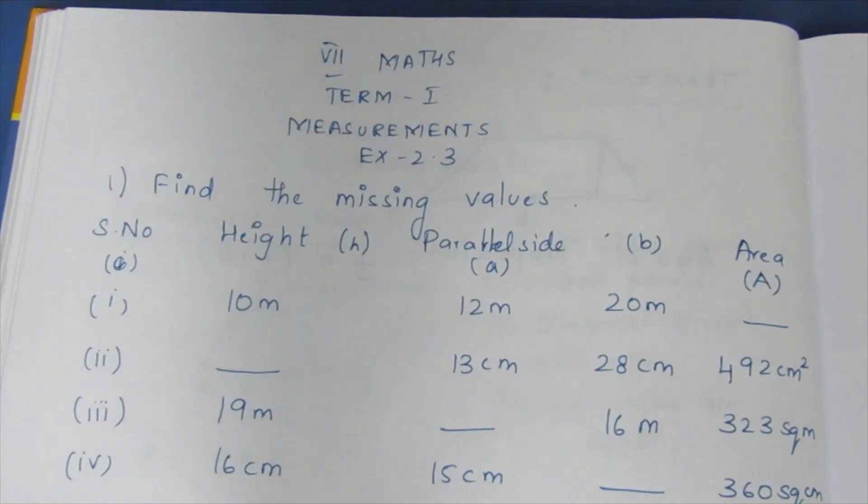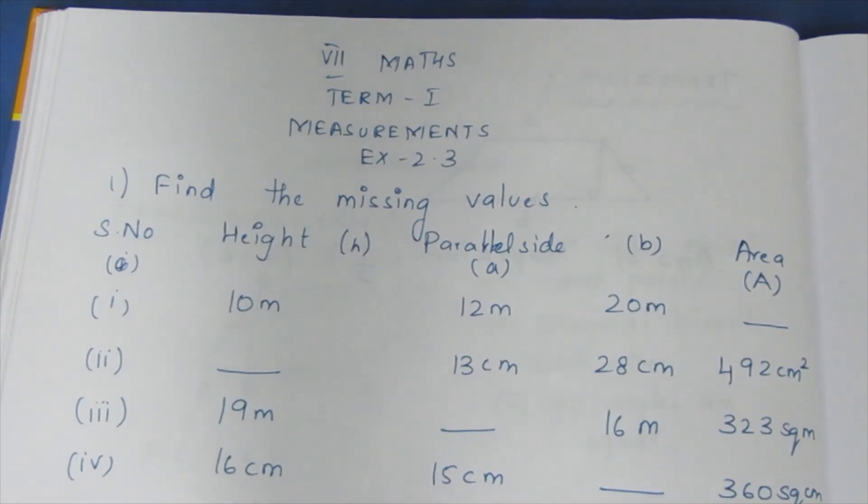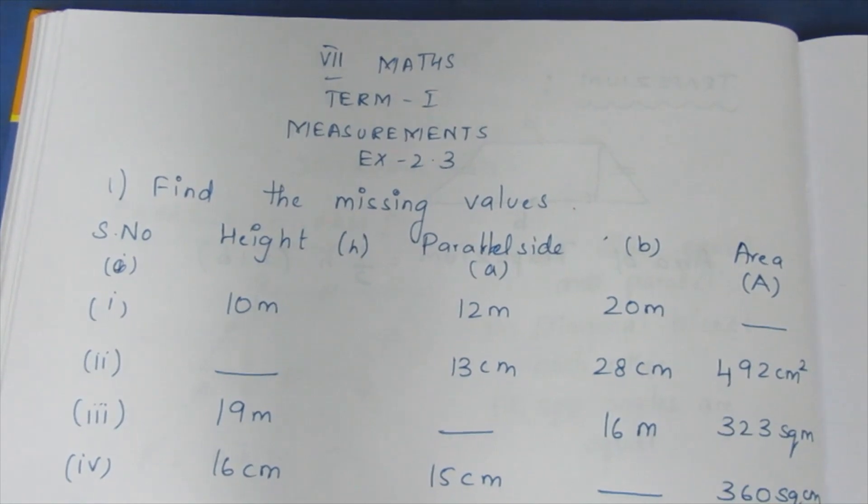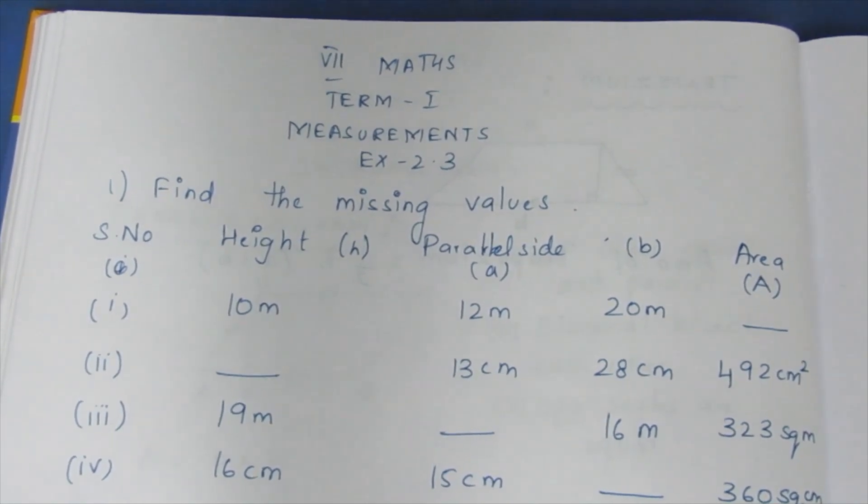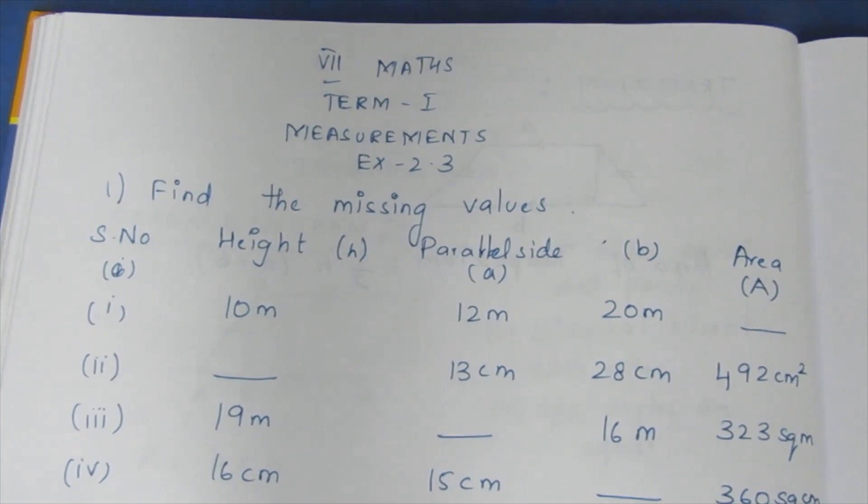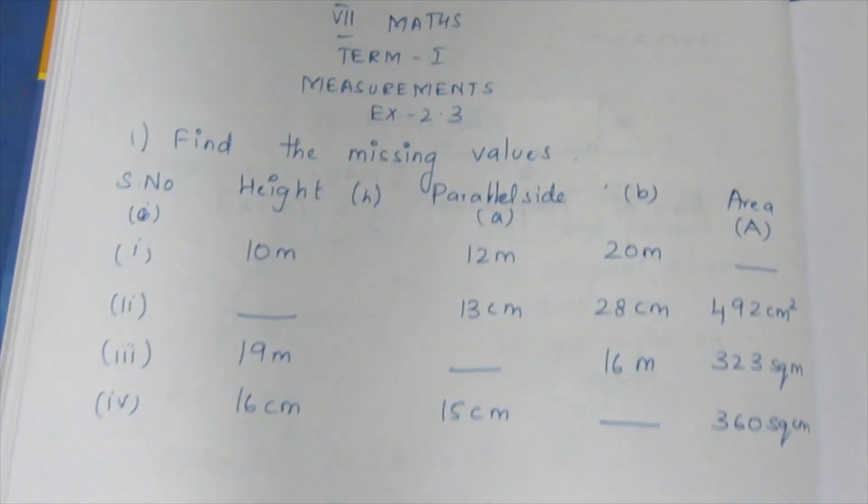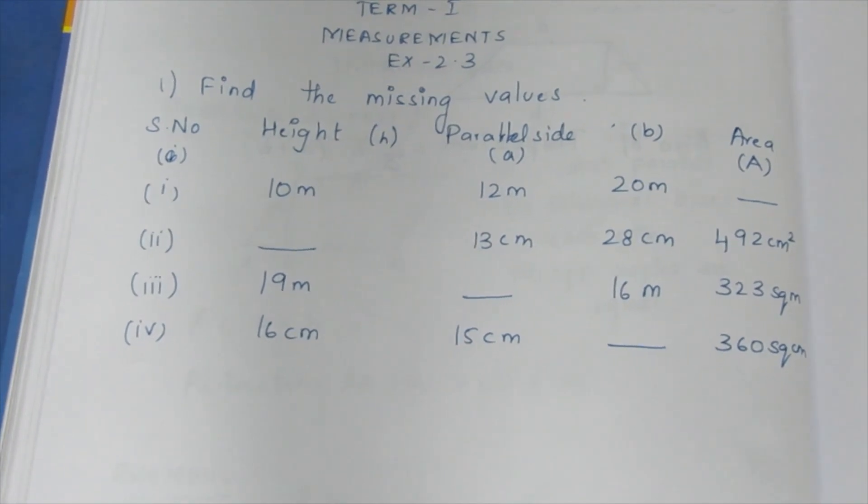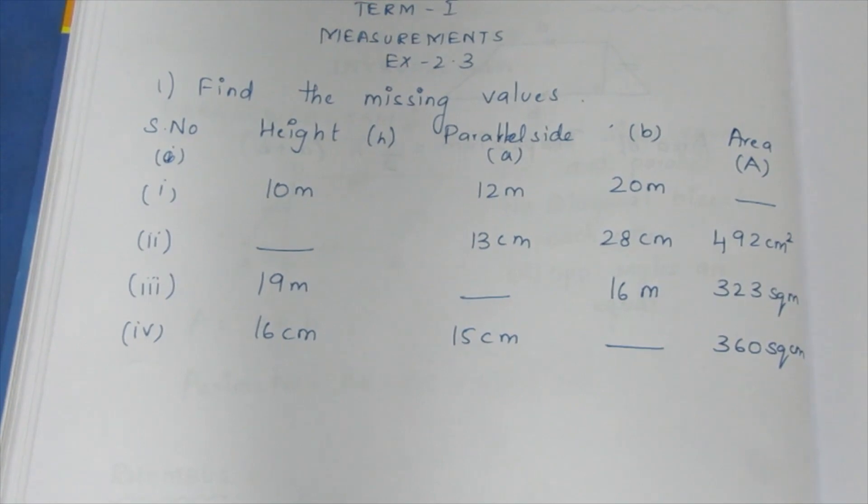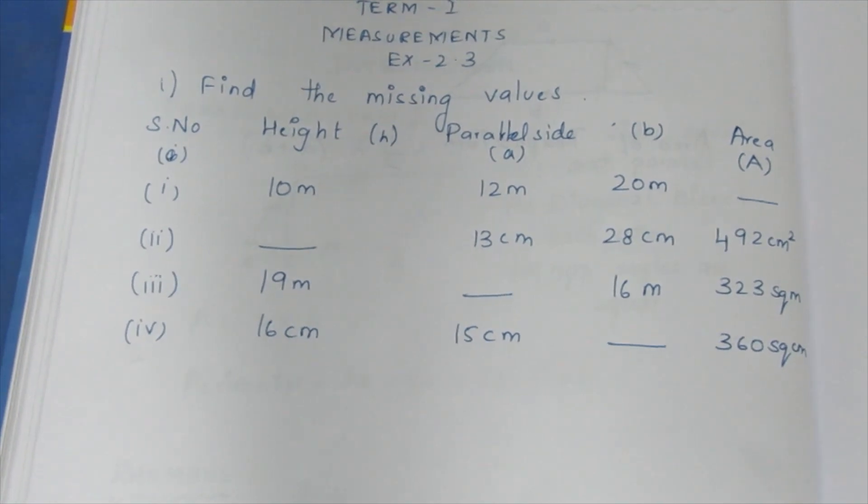Hello viewers, I am Maitli. In the 7th Max Term 1 Measurements Exercise 2.3, first sum: find the missing values. Trapezium details, missing values. Let's look at the first sum.